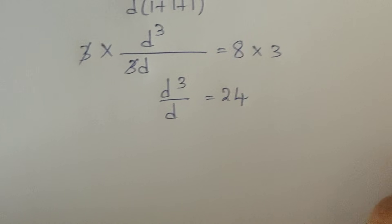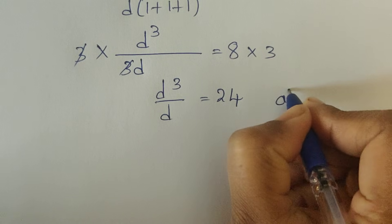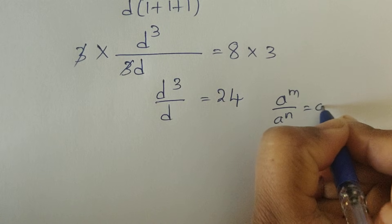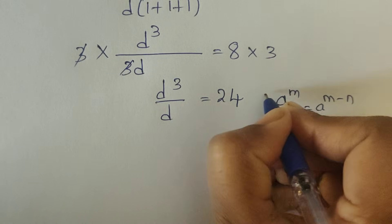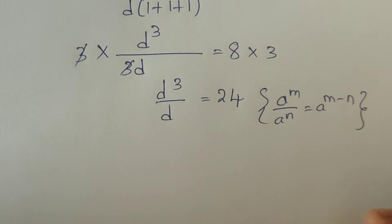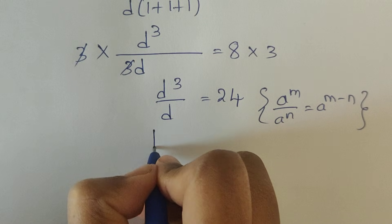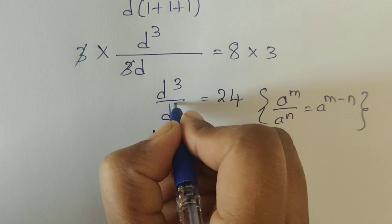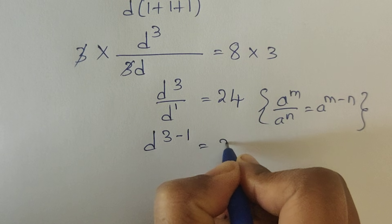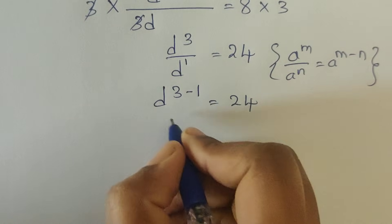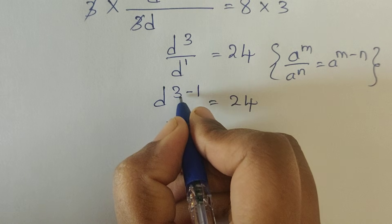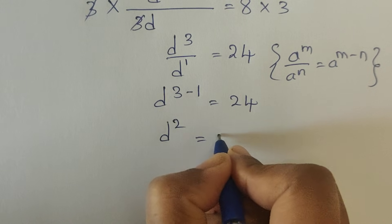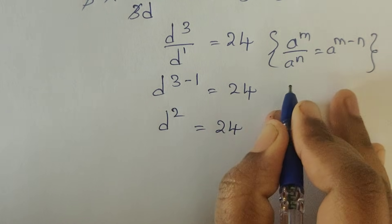Now, a to the power of m divided by a to the power of n is equal to a to the power of m minus n. Applying this law, we can write d to the power of 3 minus 1, which is equal to 24. So d to the power of 3 minus 1, which equals 2, is equal to 24. Now apply the square root.